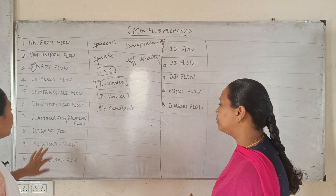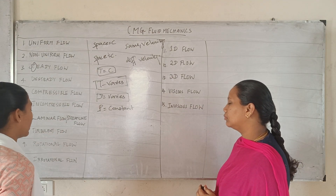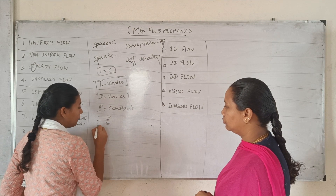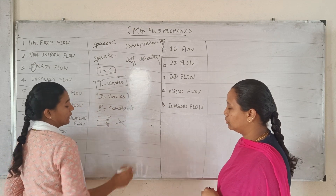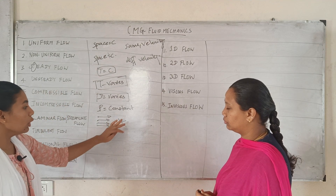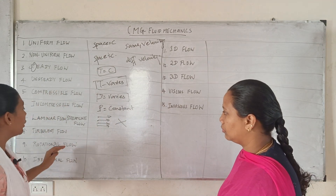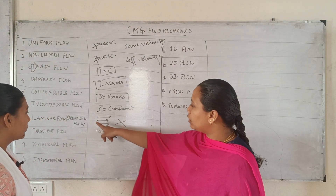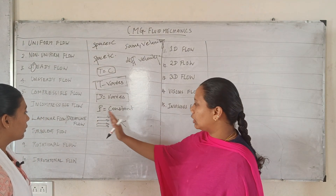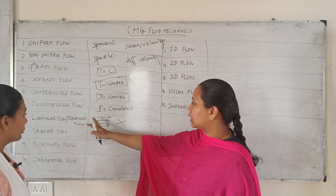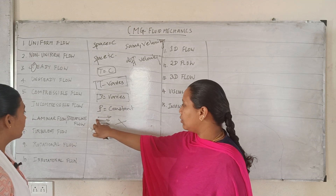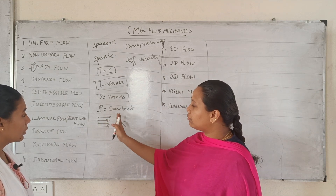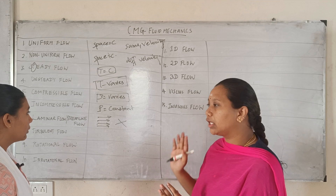Laminar flow or streamlined flow — every particle has a definite path which does not intersect. Every liquid particle has a definite path, and the path of the liquid does not intersect. That is laminar flow or streamlined flow.